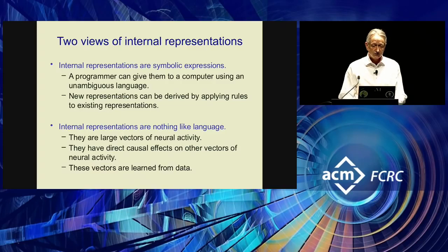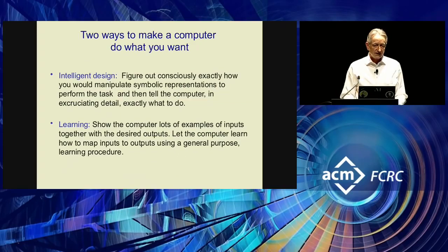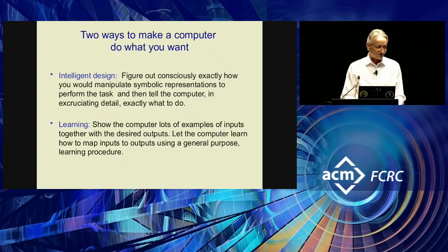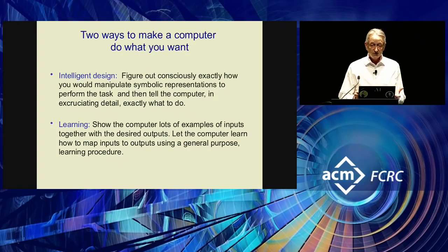I'm giving caricatures of the two positions to emphasize how different they are. They lead to two very different ways of trying to get a computer to do what you want. One method, which I slightly naughtily call intelligent design, is what you would call programming — you figure out how to solve the problem and then you tell the computer exactly what to do. The other method is you just show the computer a lot of examples of inputs and the outputs it should produce, and you let the computer figure it out. You have to program the computer there too, but it's programmed once with some general-purpose learning algorithm.